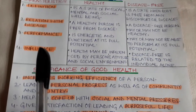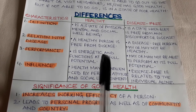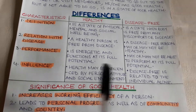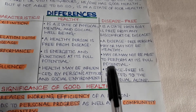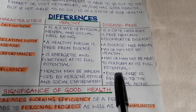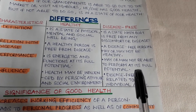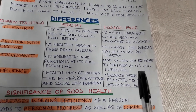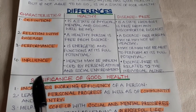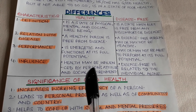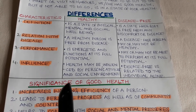Number three — performance: a healthy person is always energetic and functions at full potential. A disease-free person may or may not be able to perform at full potential if he or she is in a state of poor social or mental health.